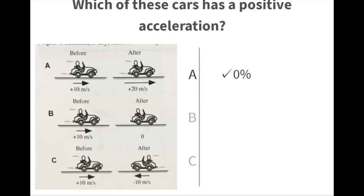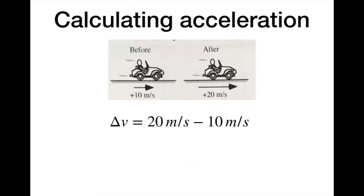Car A starts at 10 meters per second moving to the right, and to the right is positive. It ends at 20 meters per second. Taking 20 minus 10 gives a positive 10 meters per second change in velocity. Whatever time it took, divided by a positive time, that's still going to be a positive acceleration. So we find the change in velocity: final 20 minus beginning 10, then divide by the given time.